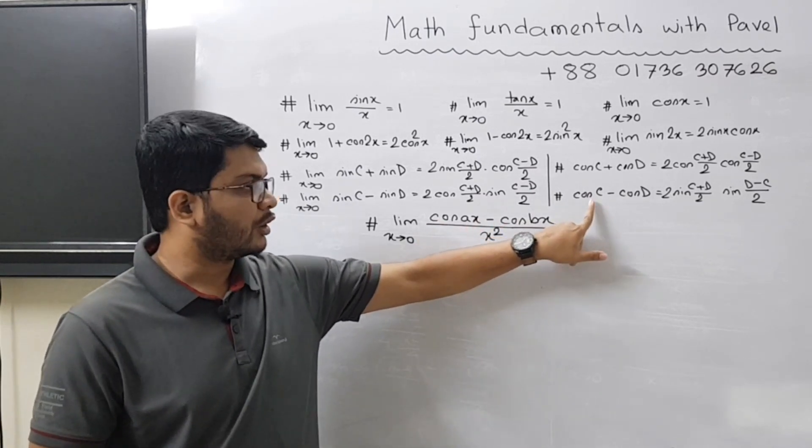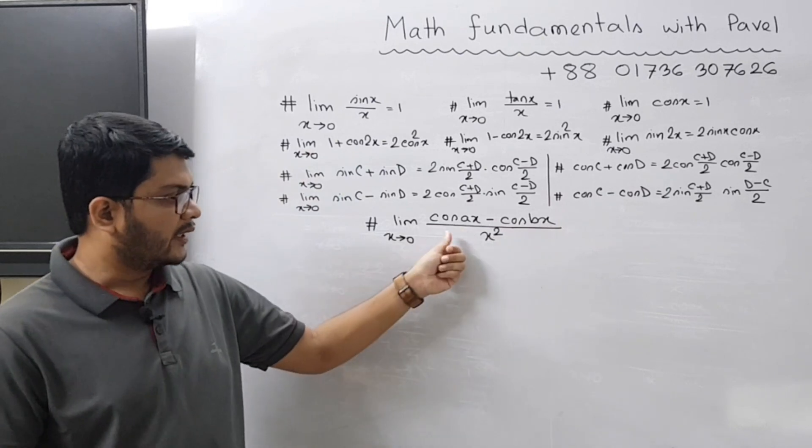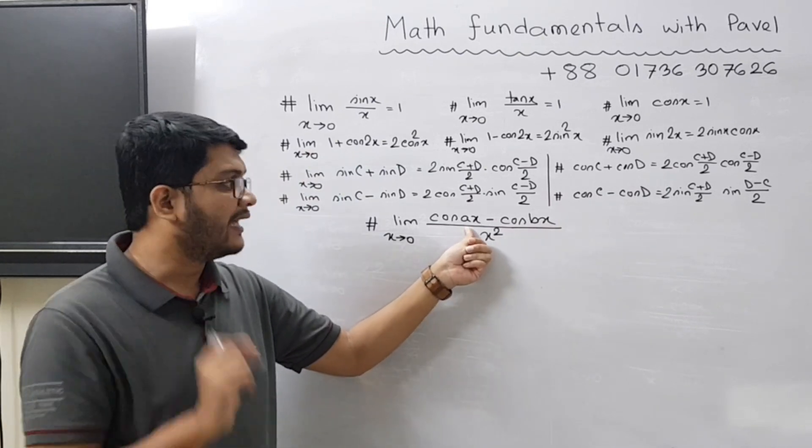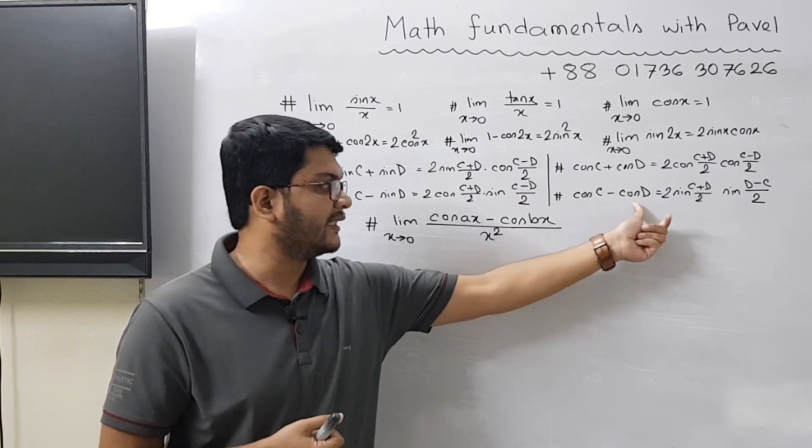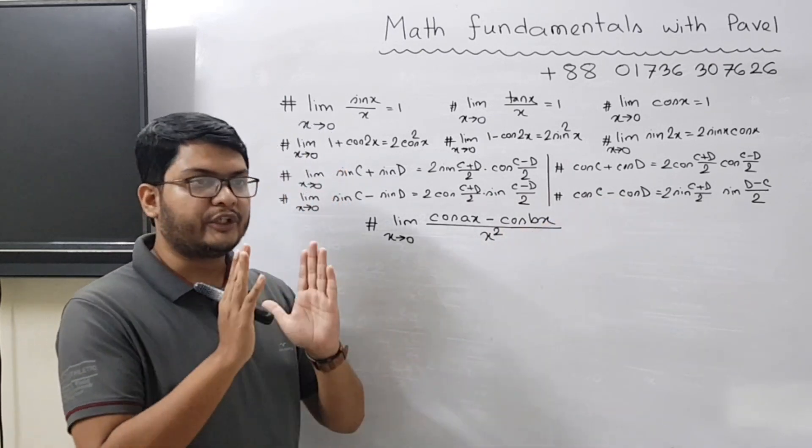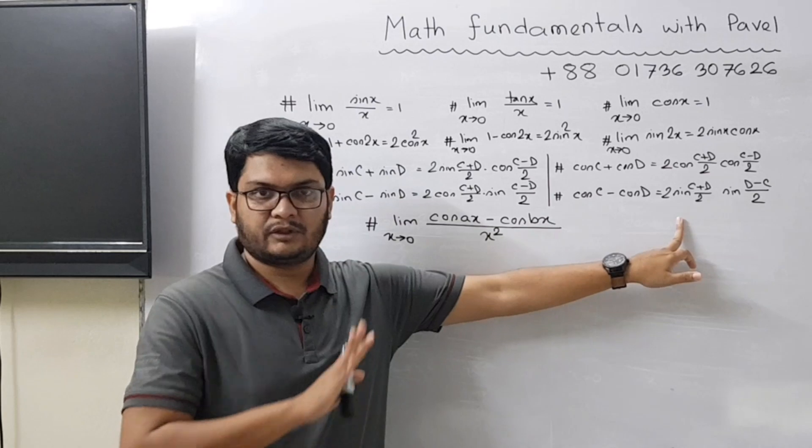So you consider ax as c and bx as d, so you get this expression cos c minus cos d. You will apply this formula here. So the first thing is set up.